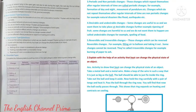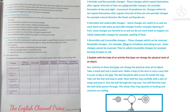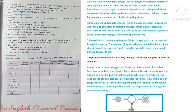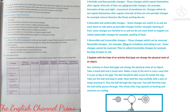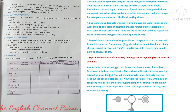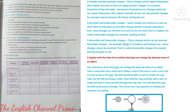Question two: Explain with the help of an activity that heat can change the physical state of an object. Activity: Take a metal ball and a metal wire. Make a loop of the wire just as big as the ball, so the ball can just fit inside the ring. Take out the ball and keep it aside. Now hold the ring carefully with a pair of tongs and heat it. Pass the ball through the ring — you will find the ball now easily passes through. This shows that the ring expands on heating and contracts on cooling. Check out and draw this diagram.